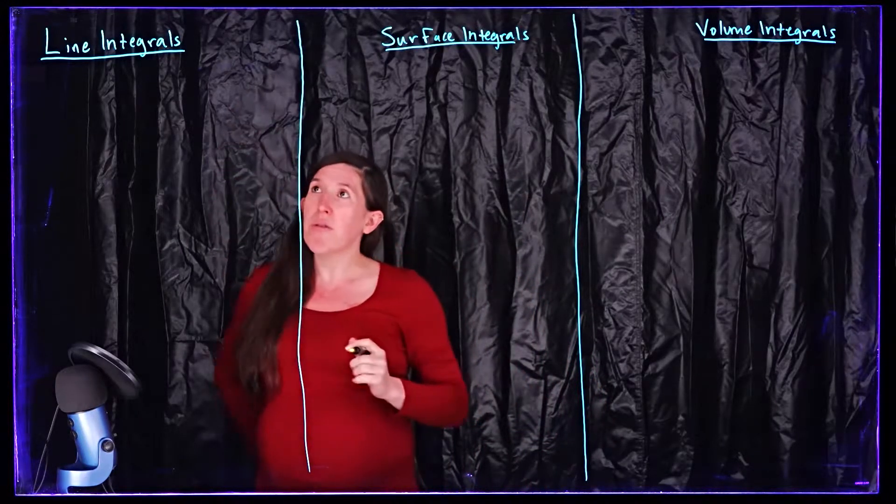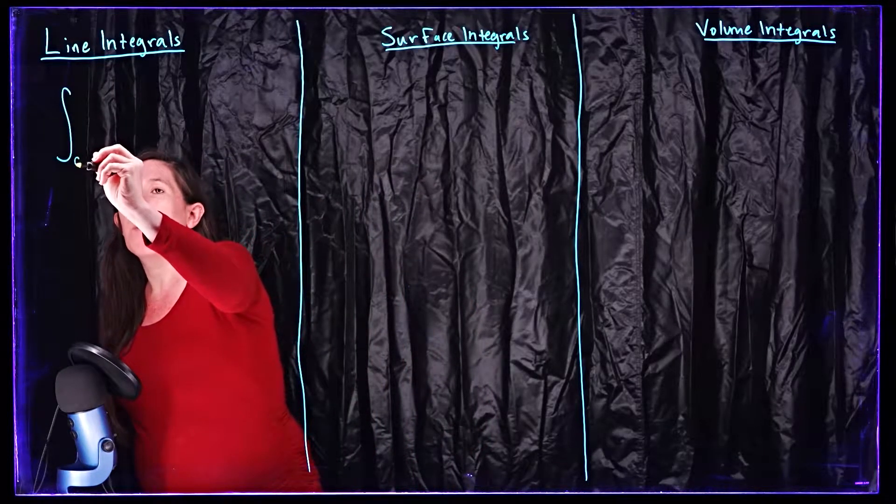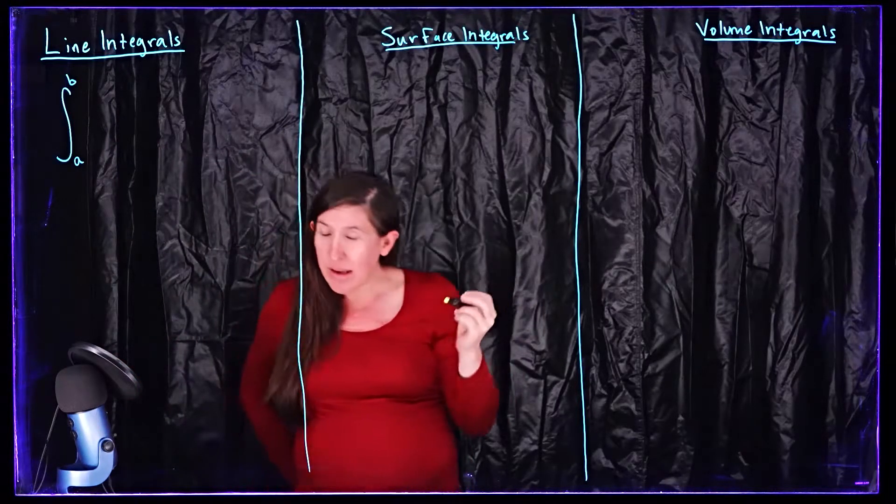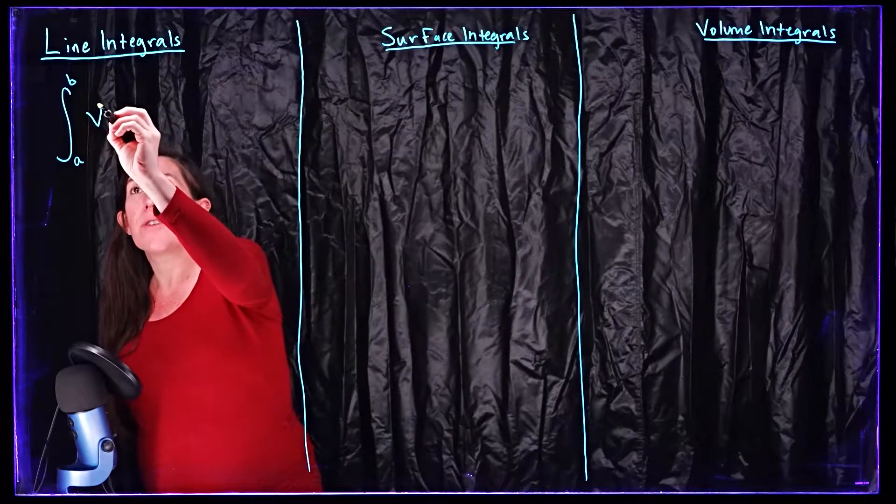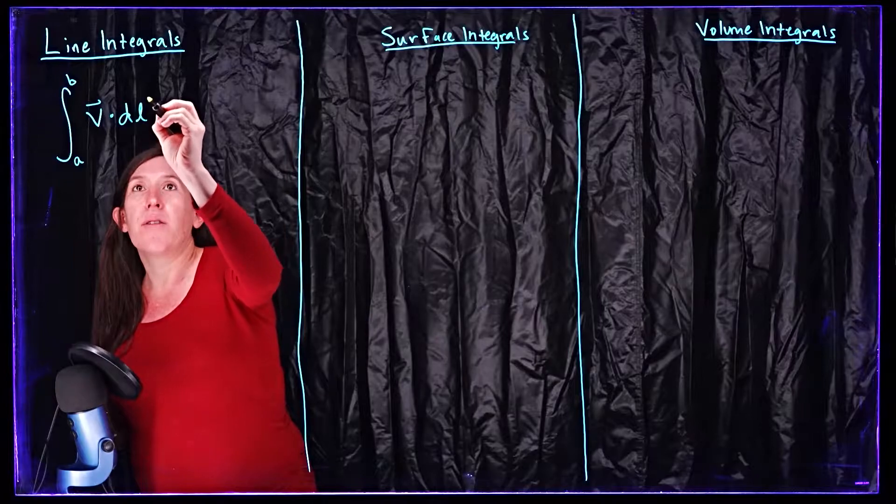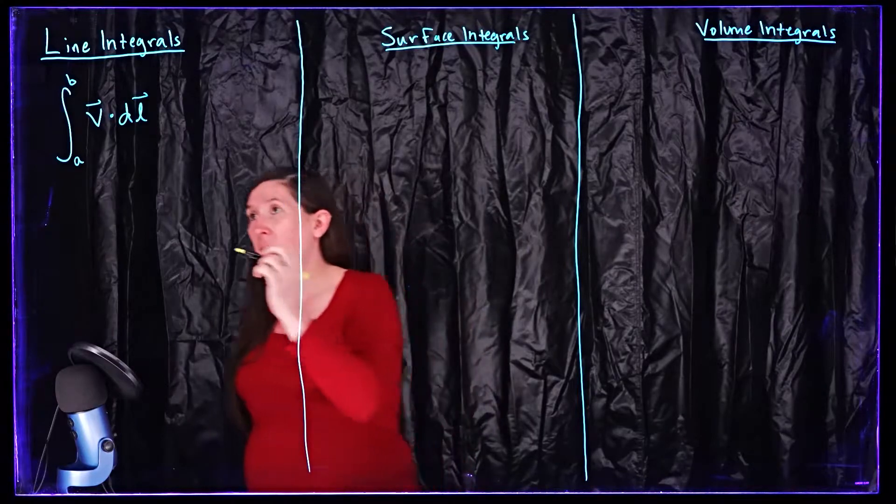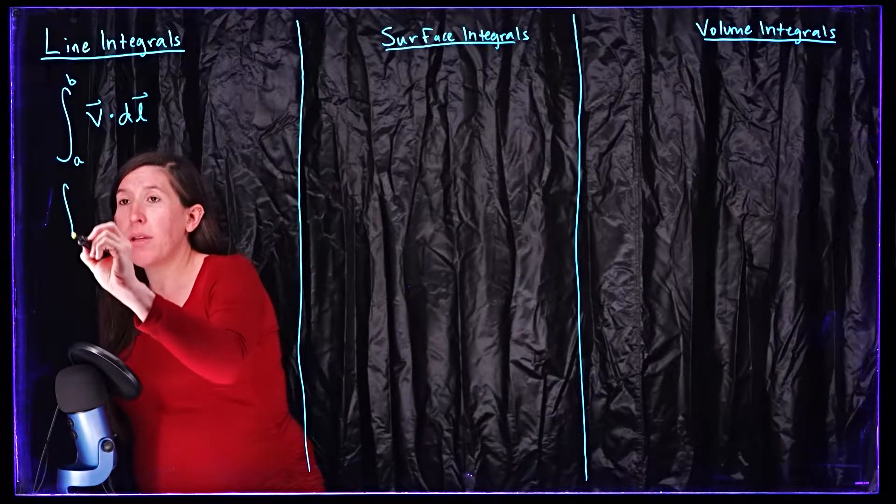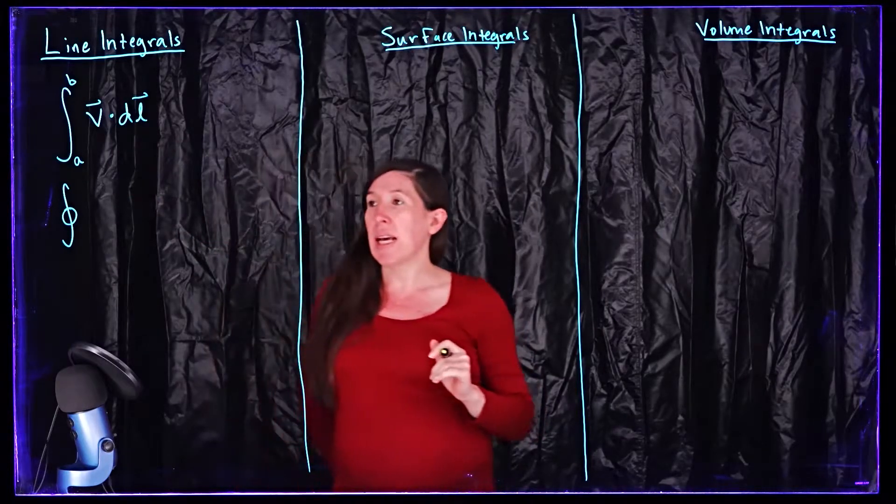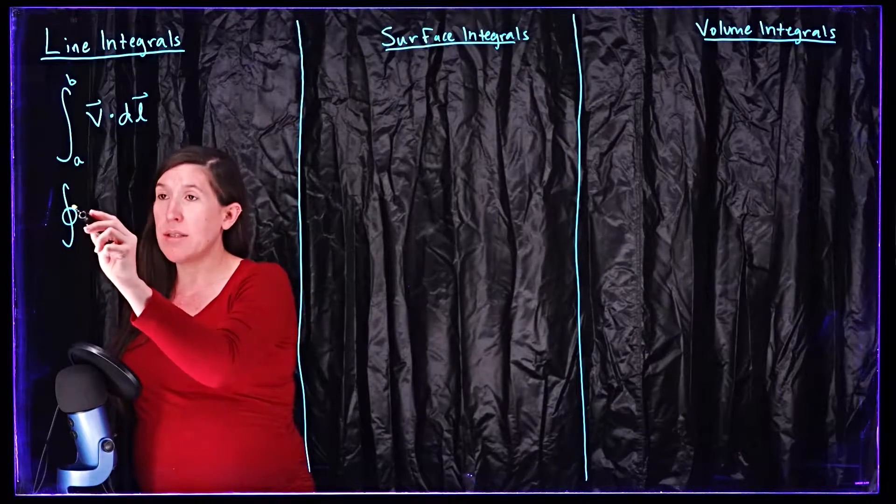All right so we'll start over here with the line integrals. So we want to take an integral from some point to generally some other point, from a to b, of a vector field dotted with dl. And we could also consider a very common notation where we take this line integral of our vector field dotted with dl around a closed loop.